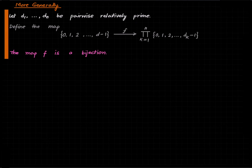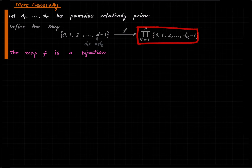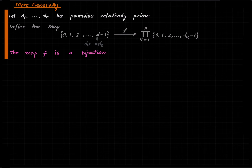A more general statement: in the previous case we had two divisors, but now we have an arbitrary finite number of them, and we assume they are pairwise relatively prime. Then we define d as the product of all the d_i's. The map goes from the set of all possible remainders modulo d to the Cartesian product of all the sets of remainders modulo each d_i. We claim this map is a bijection. The proof is exactly the same as in the two-divisor case, and this is probably the most general way to state the Chinese remainder theorem in elementary number theory.